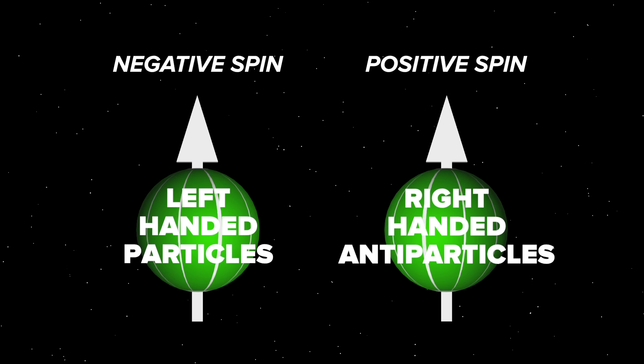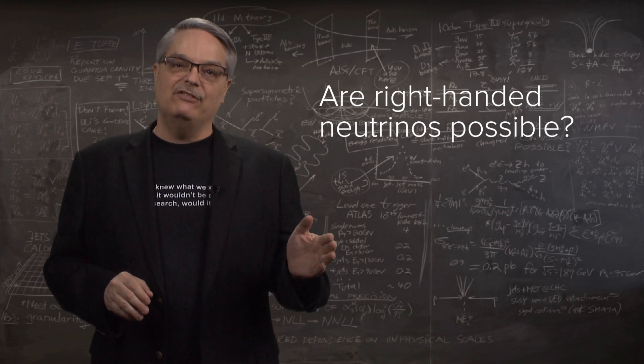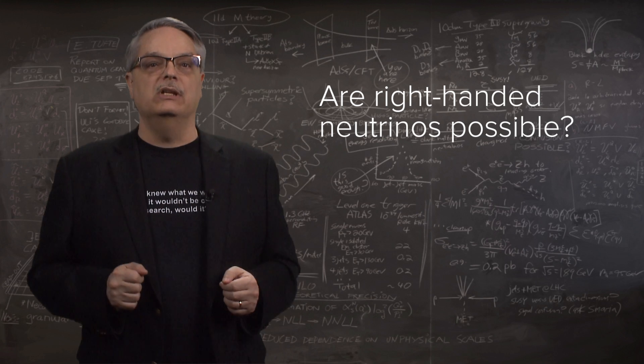Never, in any experiment, have we seen a right-handed particle interact with a weak force. So since we can only study neutrinos with a weak force, we've only seen left-handed or negative spin neutrinos.